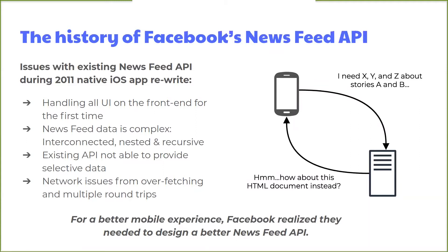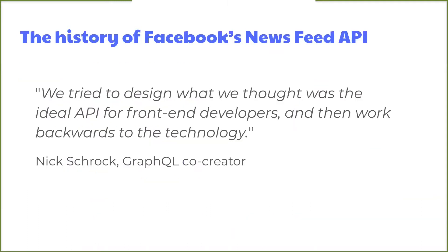Not only did this result in a large amount of round-trips, but each response would contain a lot of data that wasn't needed. Both of these factors combined resulted in unacceptable network performance for the new app. At this point, it was clear to Facebook that they needed to design a better API for the Newsfeed feature to improve the mobile experience.